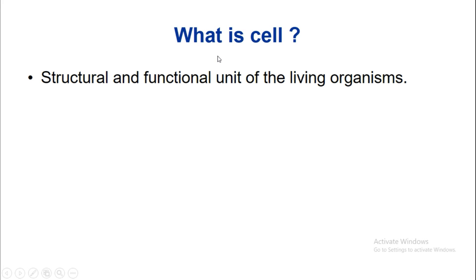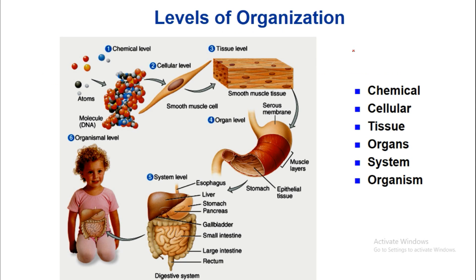First of all, what is a cell? A cell is the structural and functional unit of living organisms, or in other words, the basic living unit of the body. Levels of organization starting from the chemical level, cellular level, tissue level, organ level, system level, and organismal level — these are the levels of organization of human physiology.